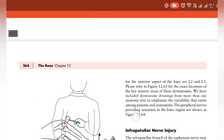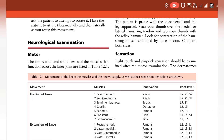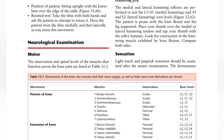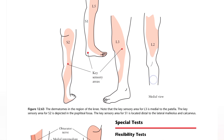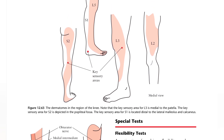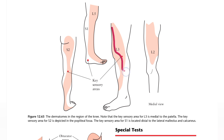The next information is about sensation. We check the sensory supply. Light touch and pin prick sensation should be examined after the motor examination. We examine the dermatomes: the anterior aspect of the knee is L2 and L3. L3 is medial to the patella.